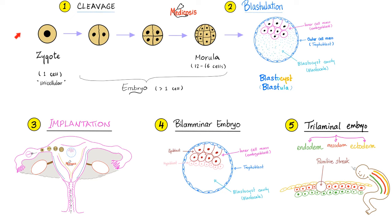What happened when the sperm met the ovum? Fertilization, then zygote formation, then cleavage — you get the morula. After this, the blastocyst, hashtag blastulation. The blastocyst will be implanted into the posterior superior aspect of the endometrium of the wall of the uterus of mommy — called implantation. Next, you have the bilaminar embryo: two layers — epiblast and hypoblast.